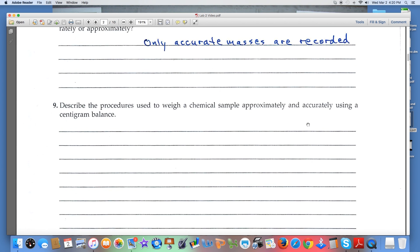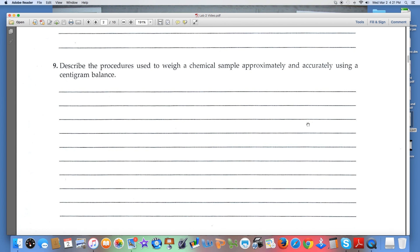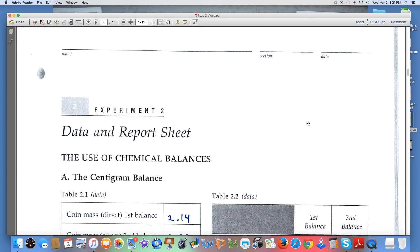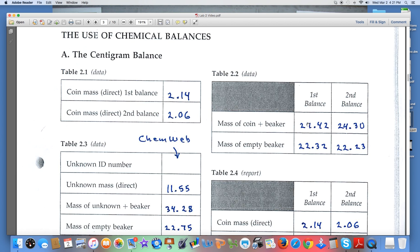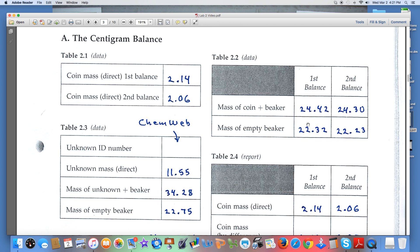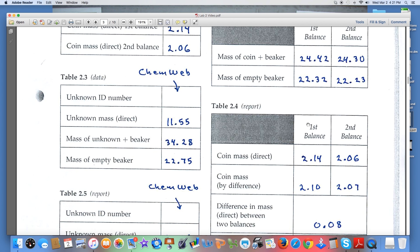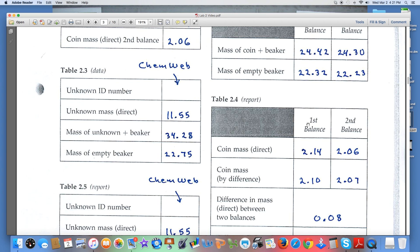Question nine is sort of lengthy but I think it's straightforward and I don't think you'll have any problems with it. Now the first of the data sheets, part A, deals with the centigram balance. Centi means that the grader will look to see that every measurement here is recorded to the hundredth - coin mass direct, etc. In table 2.2 you're weighing by difference, again every measurement to the hundredth. Table 2.3 you'll determine the mass of an unknown, so you have an unknown number. Remember that you'll get that as you enter ChemWeb, it's your student lab number, a four digit number.